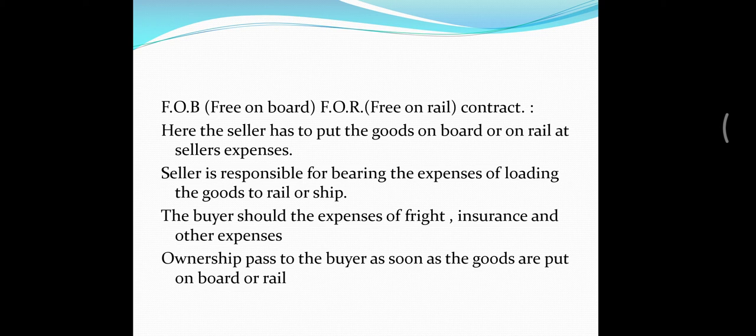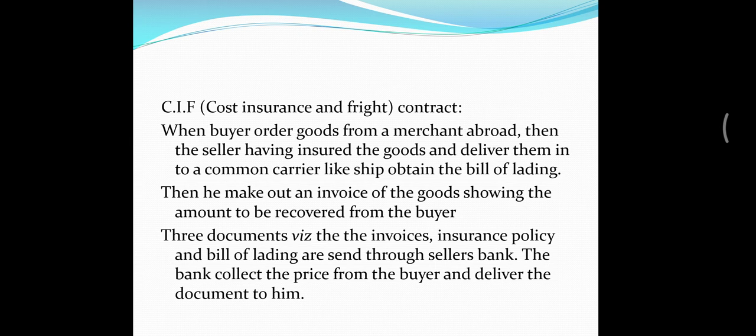The ownership passes to the buyer as soon as the goods are put on board or rail. The last contract is CIF — Cost, Insurance and Freight contract. When a buyer orders goods from a merchant abroad, the seller insures the goods, delivers them to a common carrier like a ship, and obtains the bill of lading. The seller then makes out an invoice showing the amount to be recovered from the buyer. Three documents — the invoice, insurance policy, and bill of lading — are sent through the seller's bank.